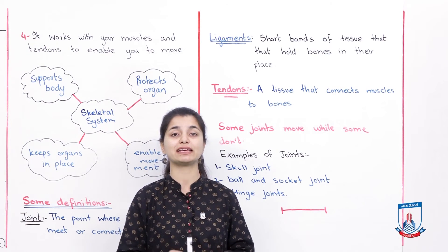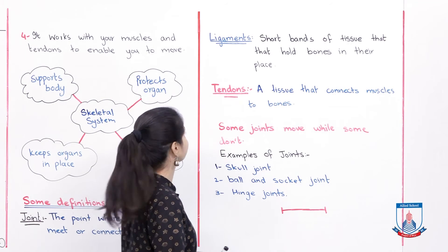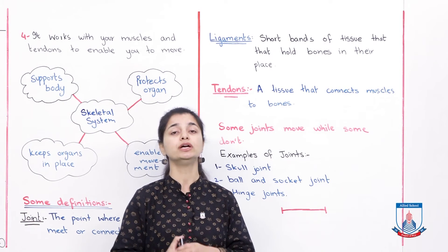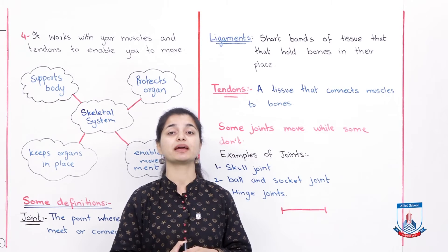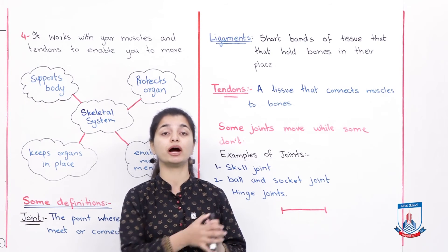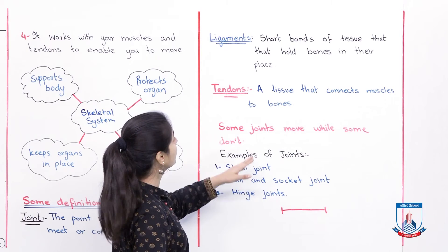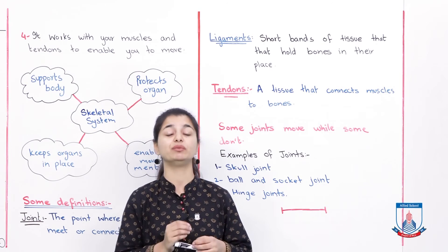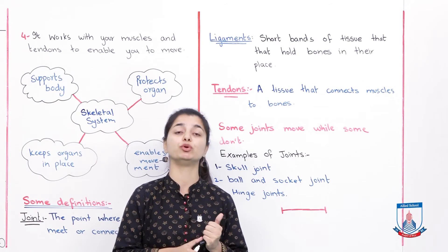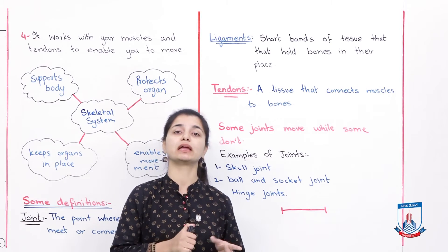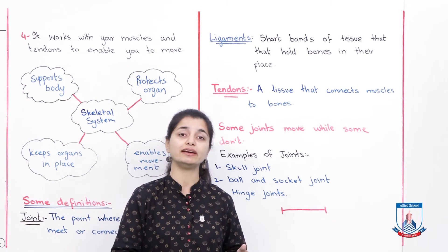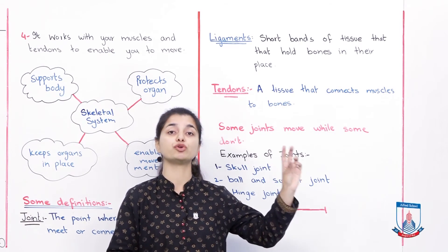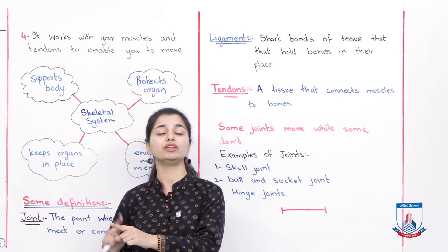The next definition is tendons. Tendons, as we discussed in the muscular system, are tissue that connects muscles to bones. So to summarize these three terms: a joint is the point where two bones meet; a ligament is what keeps the bone held in place; and a tendon is what attaches the muscle to the bone.